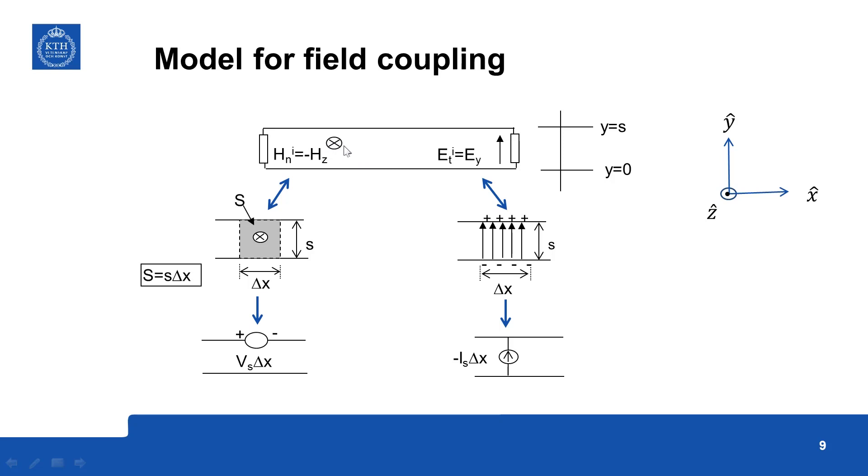So let the magnetic field be going into the plane of the paper, incident field, so that will be equal to because of this coordinate system minus Hz component and incident electric field is in the y direction, the transverse field.